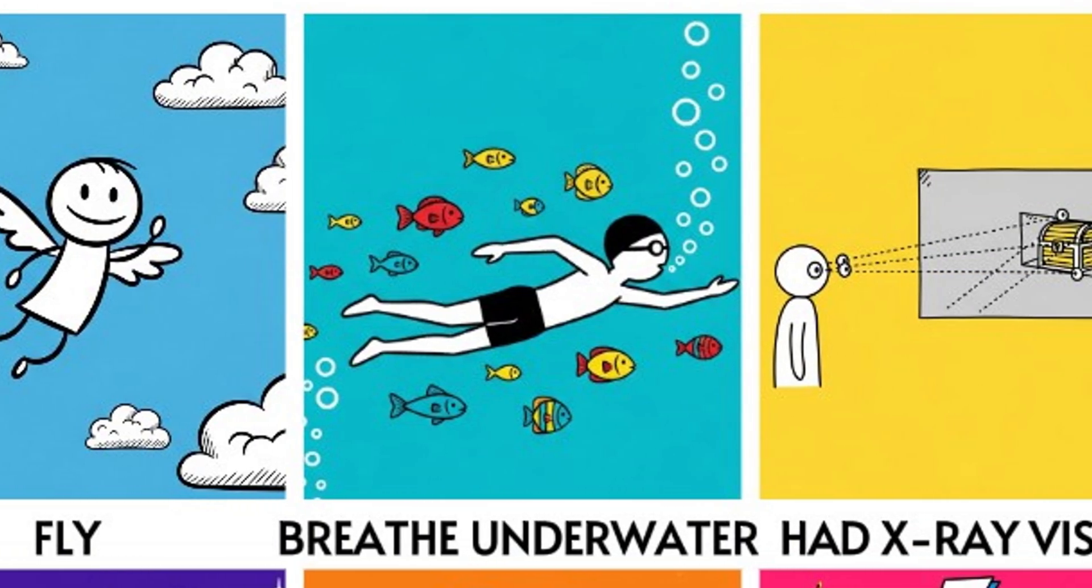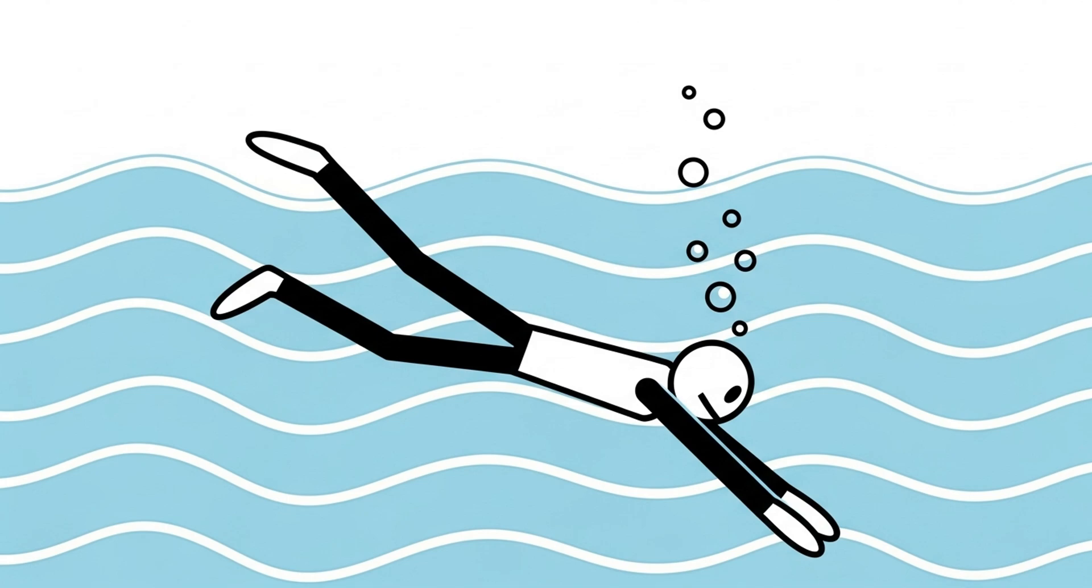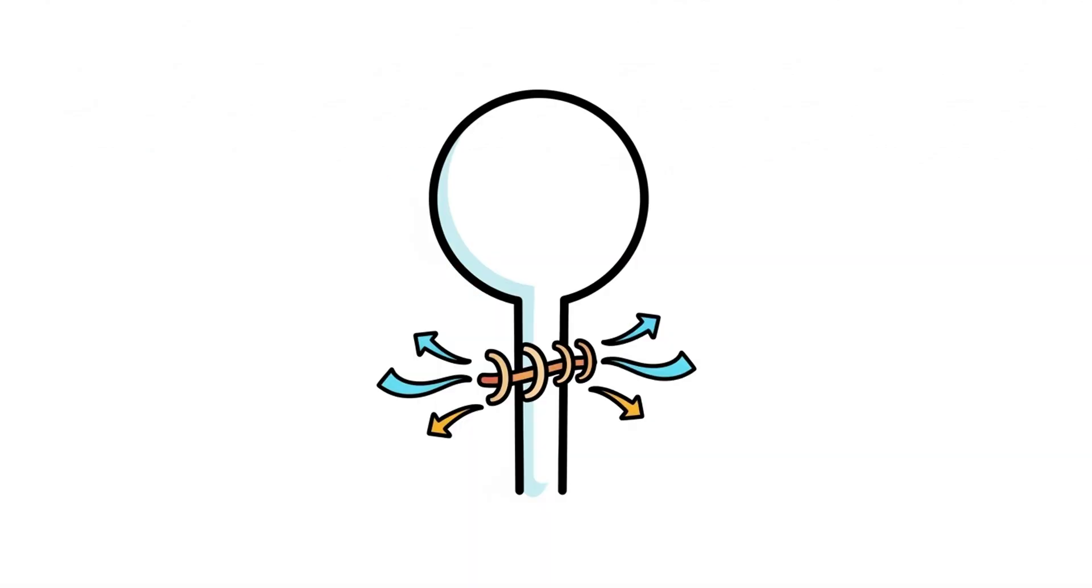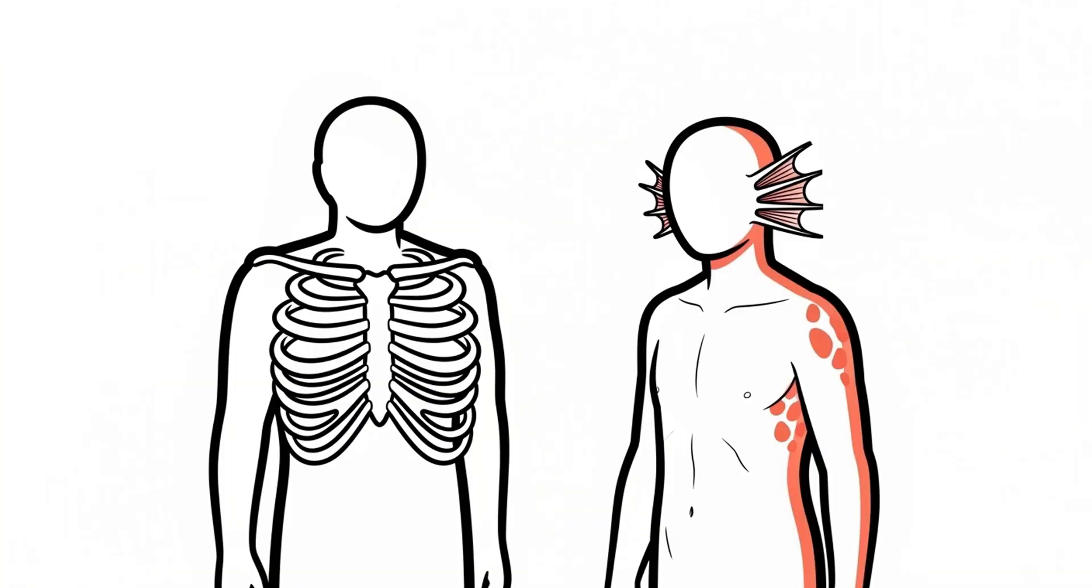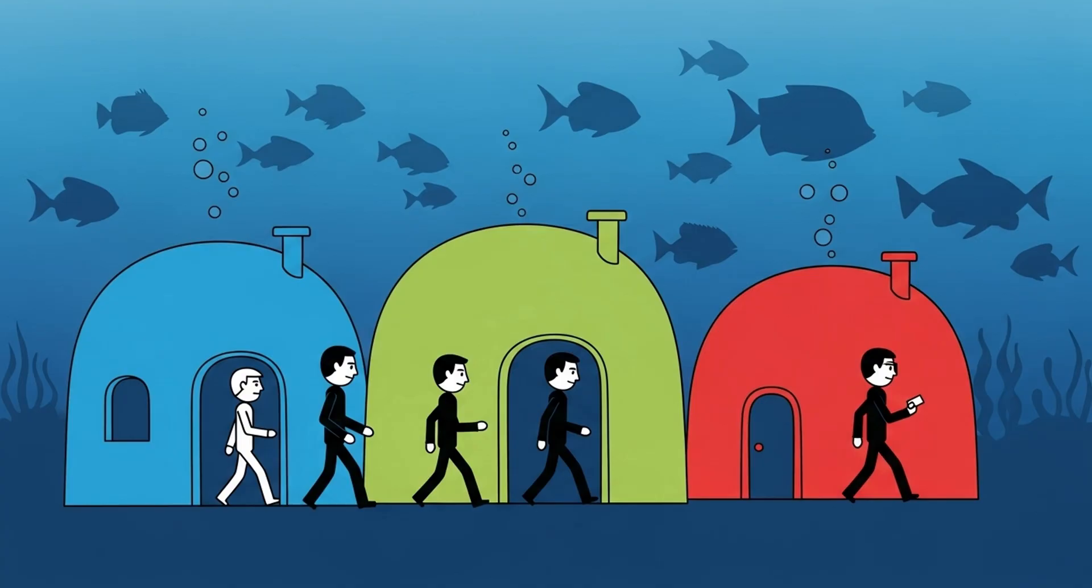What if humans could breathe underwater? Imagine taking a deep dive without ever needing to come up for air. No oxygen tanks, no snorkels, just your lungs working like a fish's gills. First, your anatomy would change. Gills need huge surface area to pull oxygen from water. Your rib cage might shrink since lungs wouldn't be your main breathing tool. The upside? You could live entirely underwater.